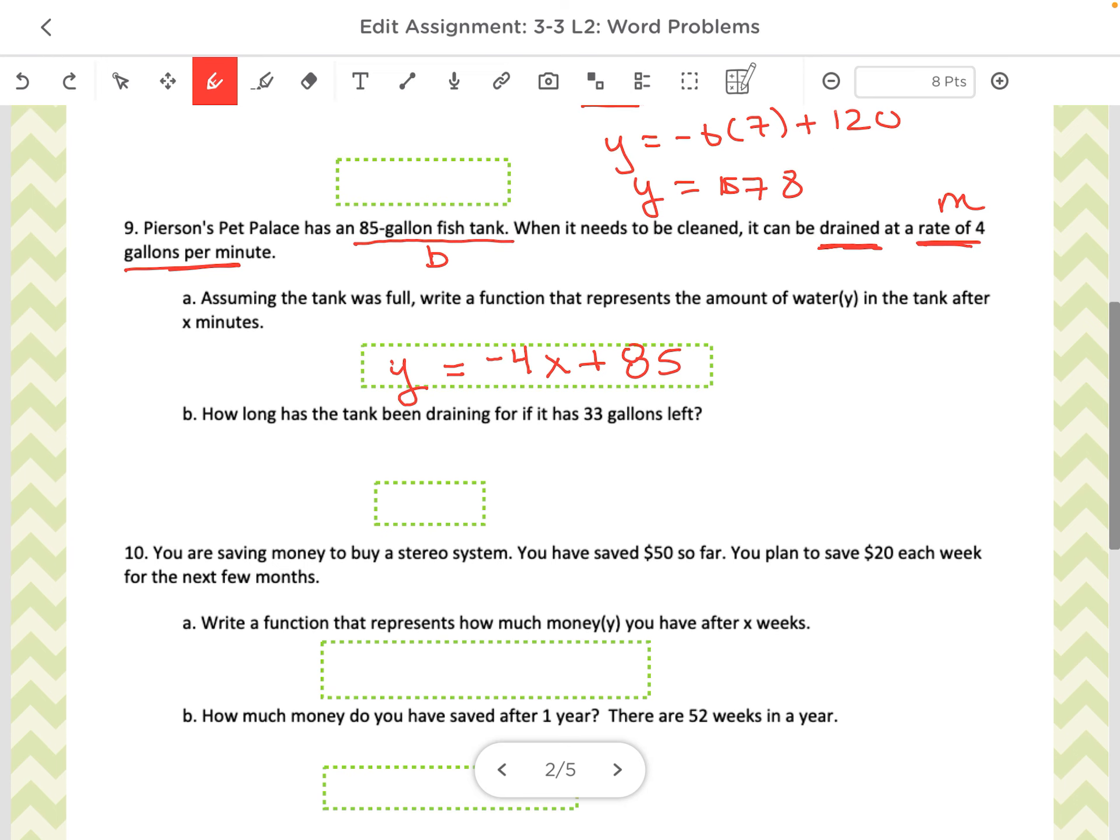How long has the tank been draining if it has 33 gallons left? So what does this 33 represent? That's the number of gallons. Remember, x is the time. So the 33 represents the y. So in this case, I'm trying to find x. So there's my setup. And then we can solve for x. So I have negative 4x equals negative 52, it looks like. So divide. So you should get x equals 13 days.